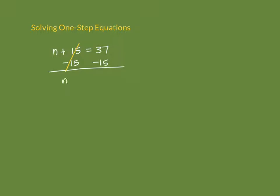You can write n plus zero, but you don't have to — when it zeroes out, that's just n. The only time you'd need to write zero is if there was nothing else on that side, since you always need something on both sides of an equation, and zero counts. On the right side, combine 37 and negative 15 as like terms: 37 minus 15 equals 22. So n equals 22.